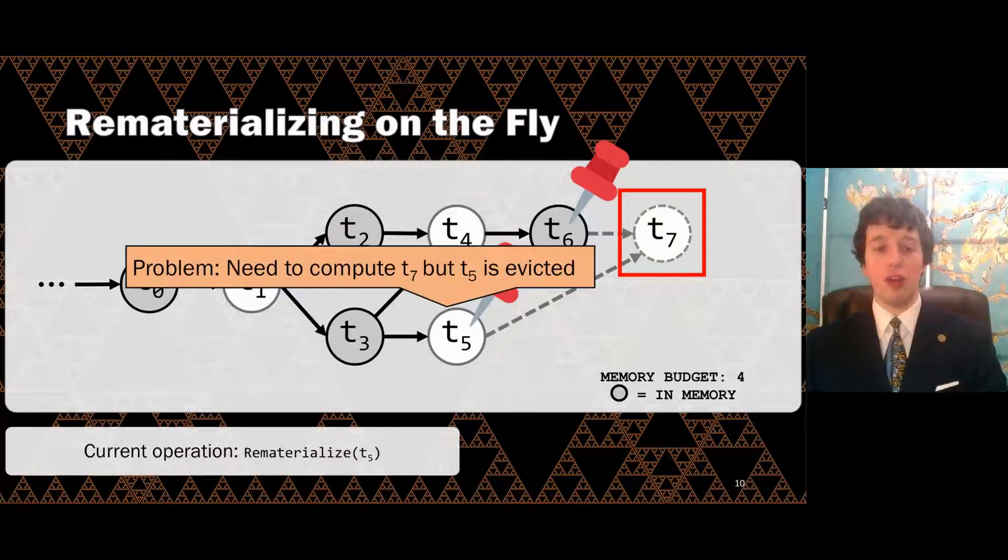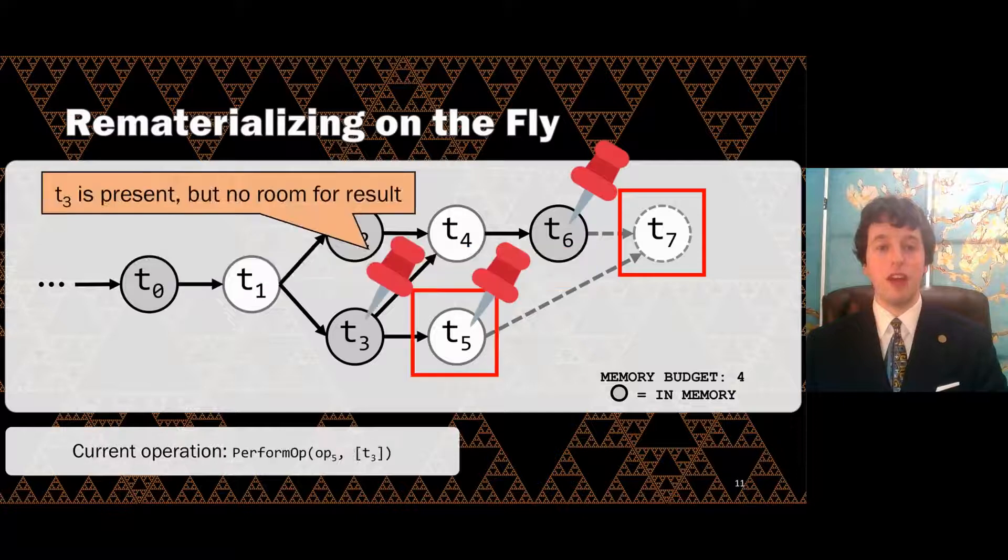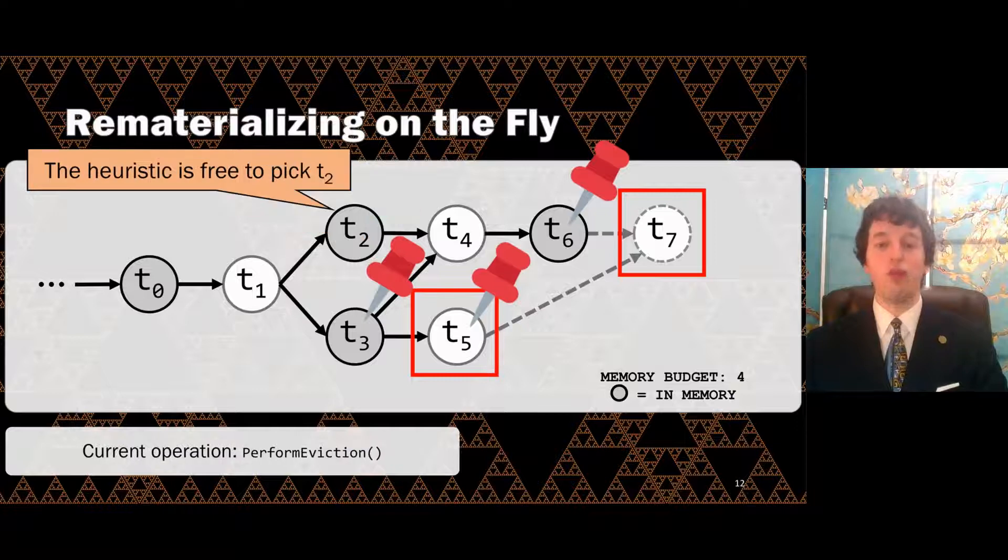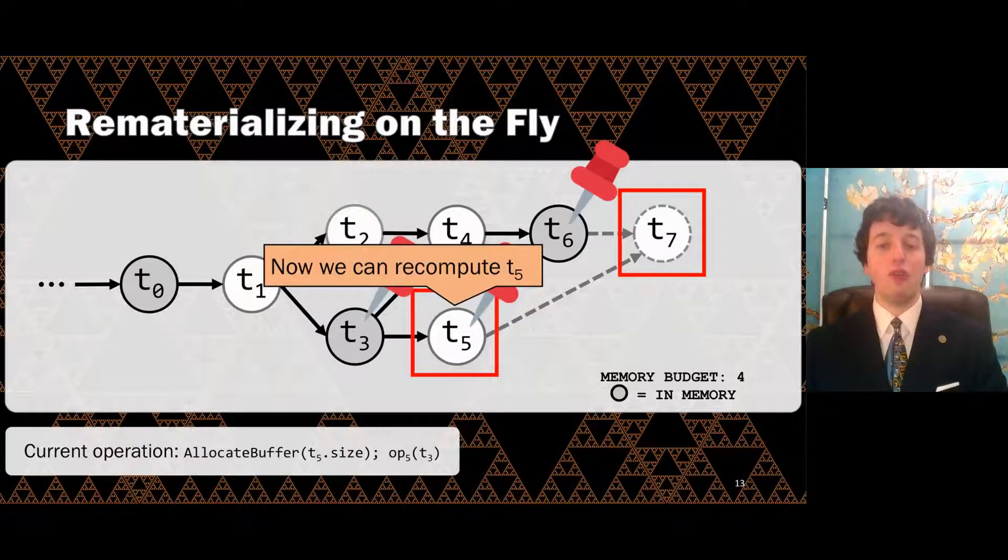Note that the values needed for the current operation are pinned in memory to ensure there won't be loops of evictions and recomputations. Right now, we're at our memory budget, and one of the arguments needed to compute T7 has been evicted, so we'll have to recompute it. The argument needed to recompute T5 is present, but there's no room to store the result. To make room, the heuristic picks T2 to evict.